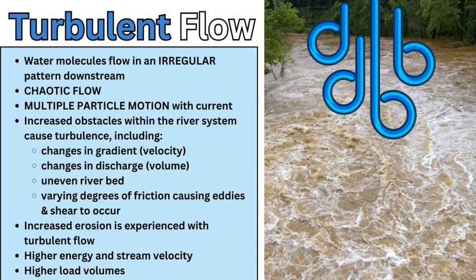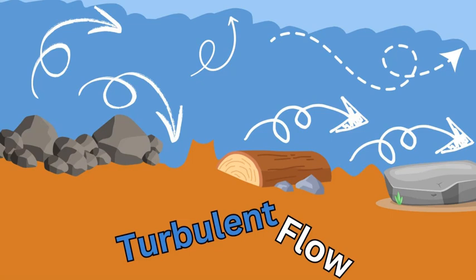Turbulent flow can be attributed to features like rapids and can cause an increased amount of erosion, leading to an increased volume of sediment load within the river itself — in terms of suspended load, dissolved load and bed load. With turbulent flow you have multi-directional, multi-velocity water molecule pathways creating this chaotic flow of water downstream, interacting with both the boundary layers, different riverbeds, obstructions and changes to the depth of the river, resulting in features like potholes, rapids and maybe even the formation of waterfalls.